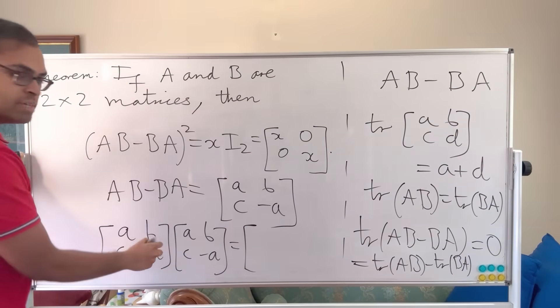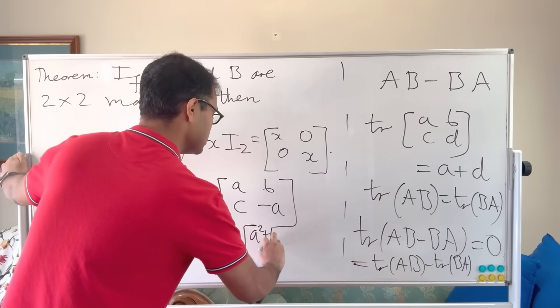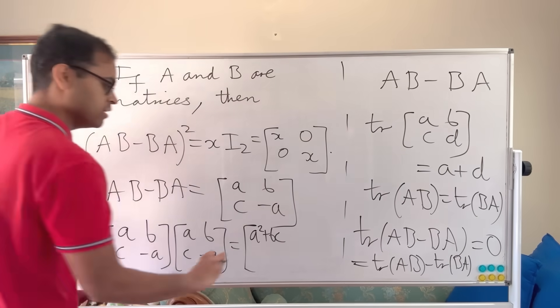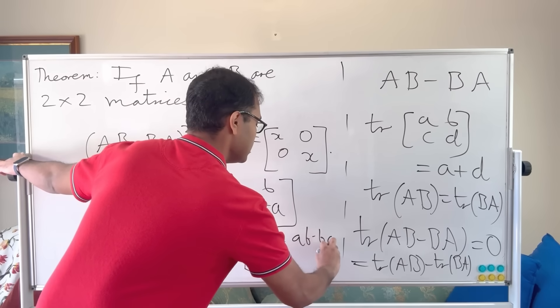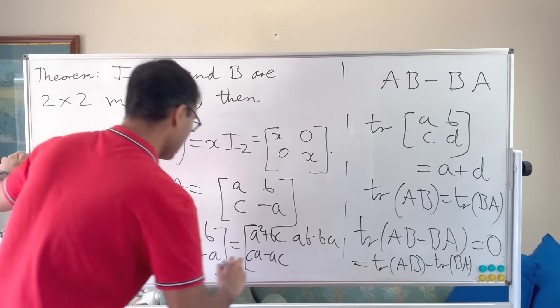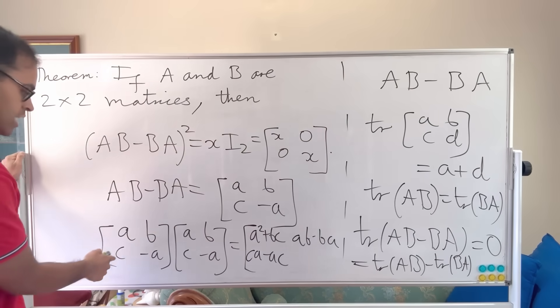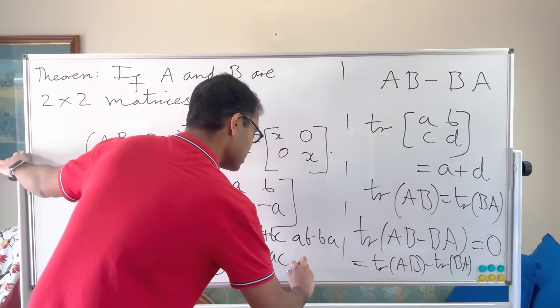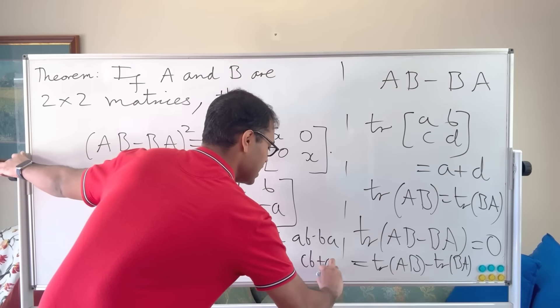We're going to get a squared plus bc. It's matrix multiplication. A squared plus bc. Then ab minus ba, right? AB minus ba. Then we're going to get ca minus ac. So we're going to get ca minus ac. And finally, we're going to get cb plus a squared because minus a times minus a is plus a squared.